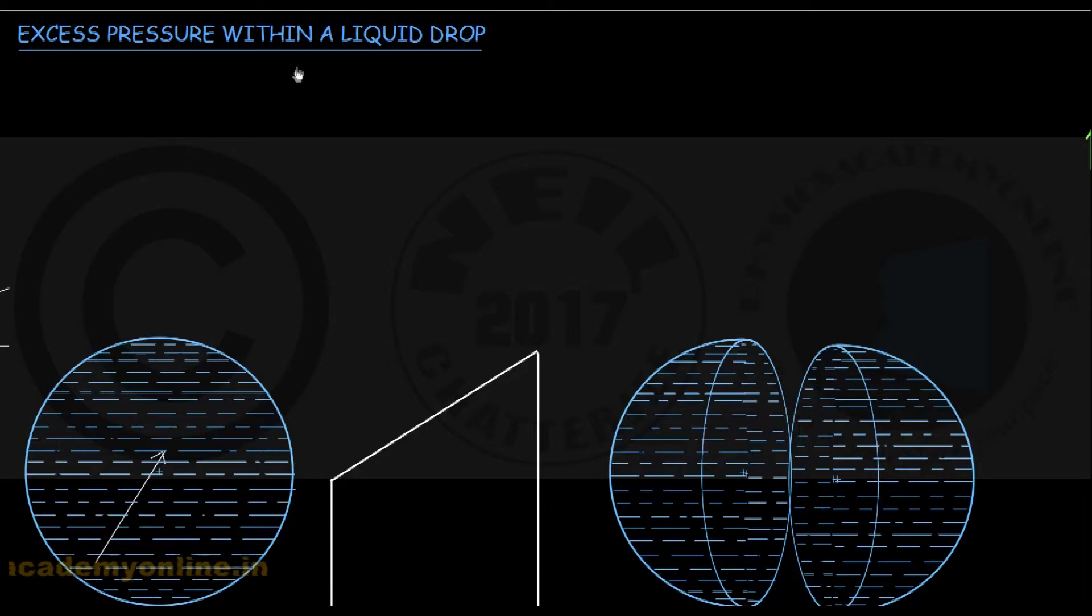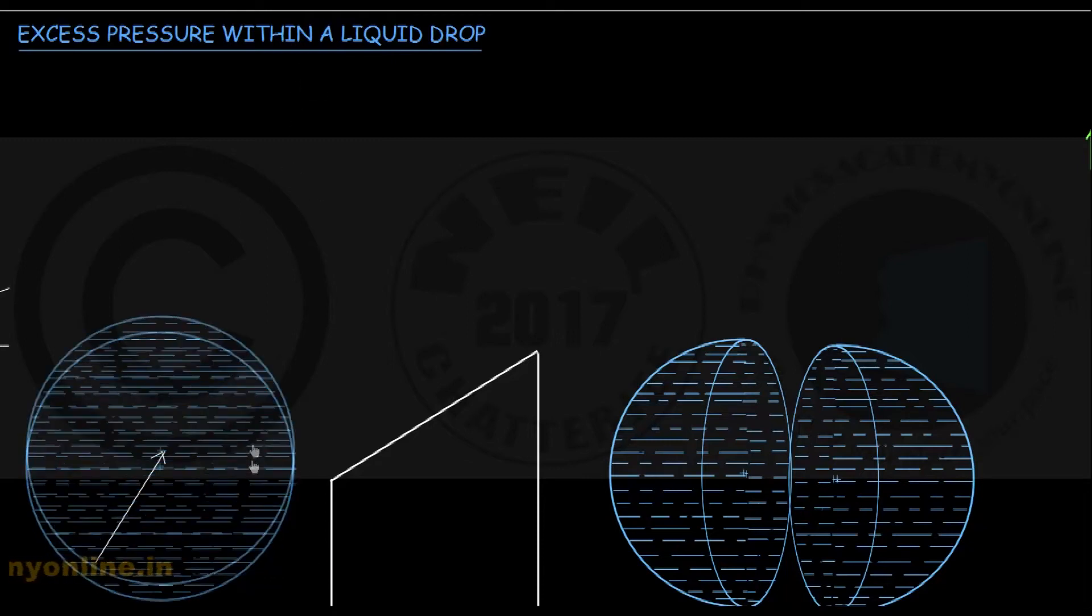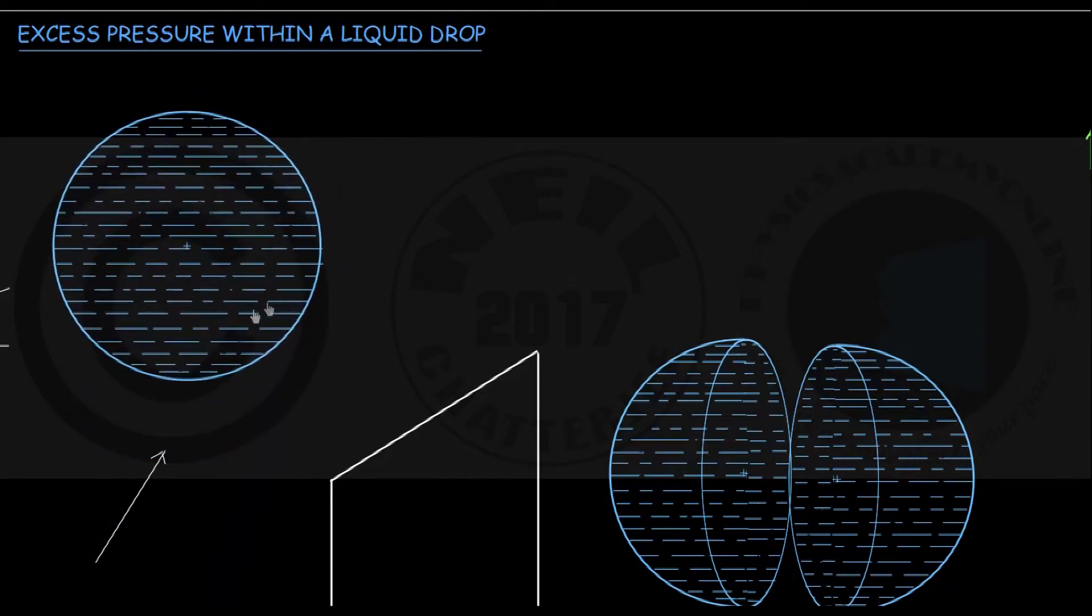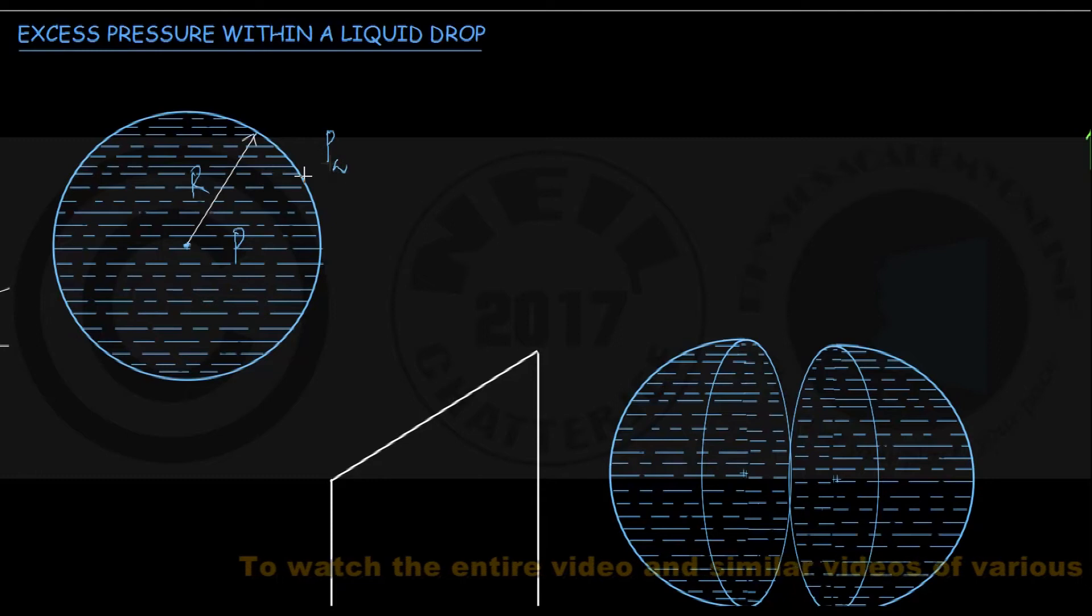To get an expression for that, we shall consider this magnified view of a spherical drop of liquid of radius capital R. This is the center of the spherical liquid drop, and suppose the pressure inside this liquid drop is P, while the external pressure is atmospheric pressure, PA.